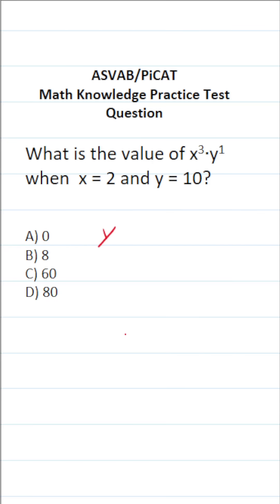So we're going to be evaluating the expression x³y¹ when x equals 2 and y equals 10. The first thing we want to do is plug in 2 for x and 10 for y respectively. This becomes 2 to the third power times 10 to the first power.